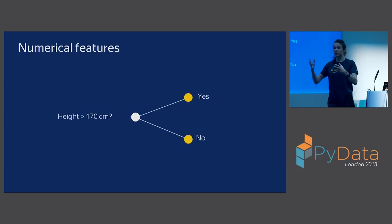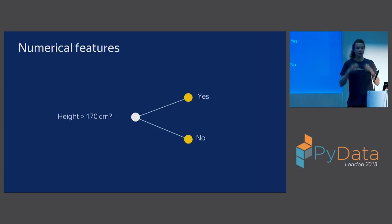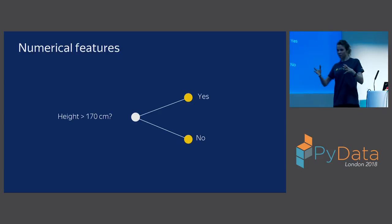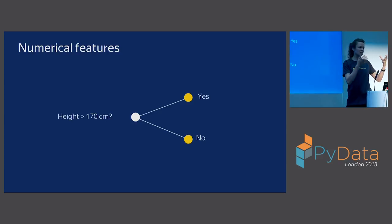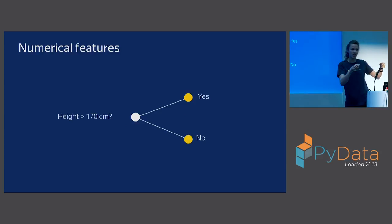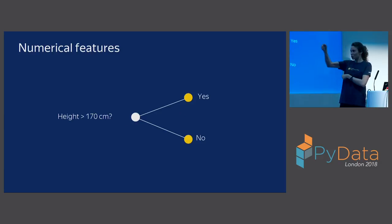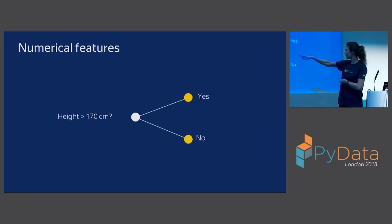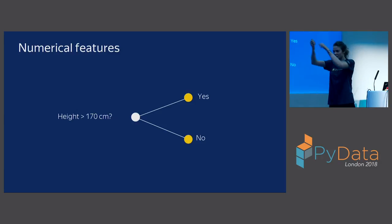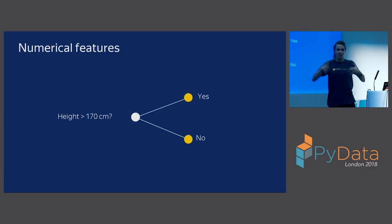Symmetric trees also help the algorithm be more robust to parameter changes, and they allow building a very fast predictor. The next topic is the way we work with data. There is numerical data — it's clear how you work with decision trees on numerical data. You just put splits like 'height is more than 170 centimeters': if yes, you go one way; if no, another way.